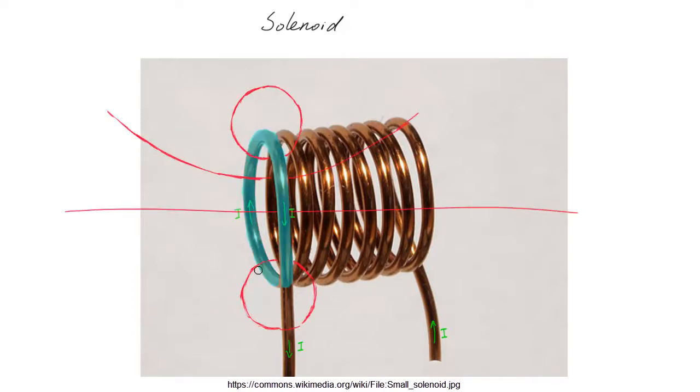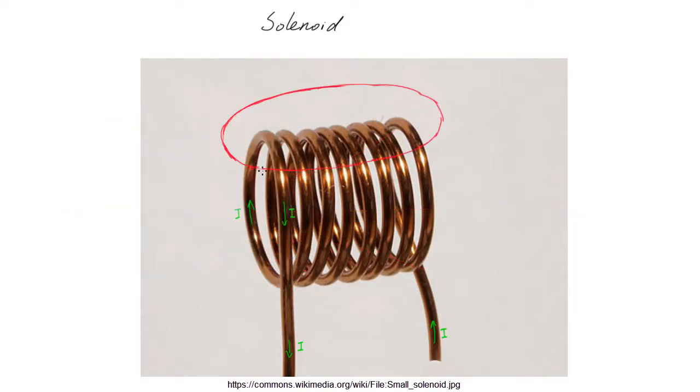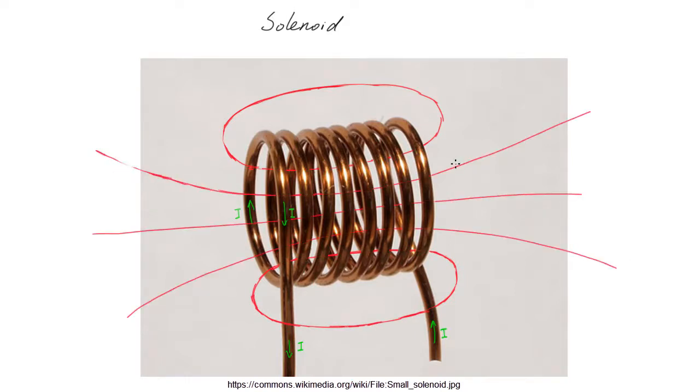Each loop would have a magnetic field going to the right inside the loop and going to the left outside the loop. Since all these magnetic fields point in the same direction, they all reinforce each other, meaning the overall magnetic field of the solenoid would be pointing to the right in the middle of the solenoid and to the left outside of the solenoid.